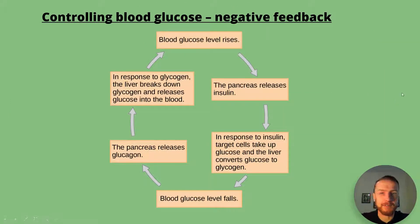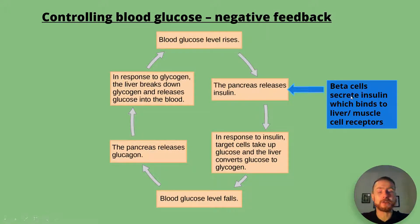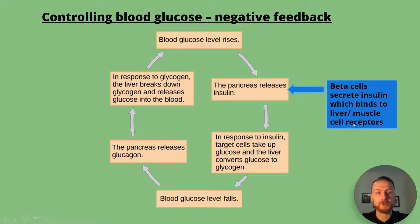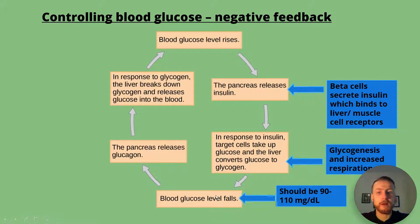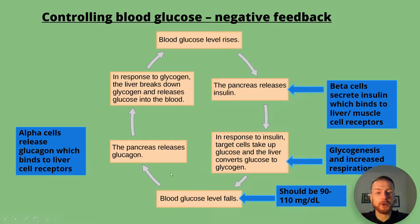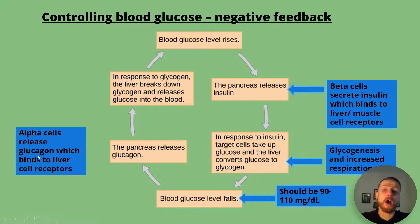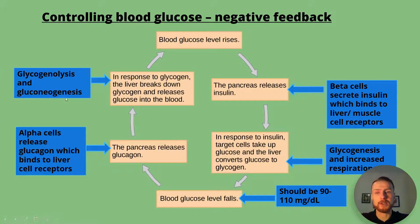For controlling blood glucose via negative feedback: the pancreas releases insulin — beta cells secrete insulin which binds to liver and muscle cell receptors. In response, target cells take up glucose and the liver converts glucose to glycogen via glycogenesis, with increased respiration. Blood glucose levels fall — normal range is around 90 to 110 milligrams per deciliter. The pancreas releases glucagon if glucose levels fall; alpha cells release glucagon and bind to liver cell receptors only — unlike insulin, which binds to both liver and muscle receptors. In response to glucagon, the liver breaks down glycogen and releases glucose via glycogenolysis and gluconeogenesis.